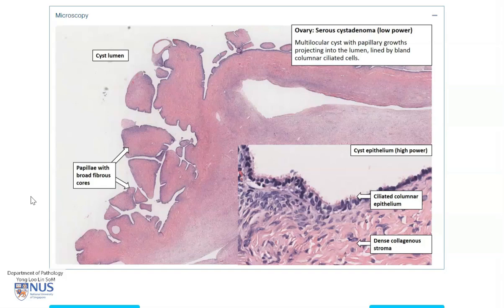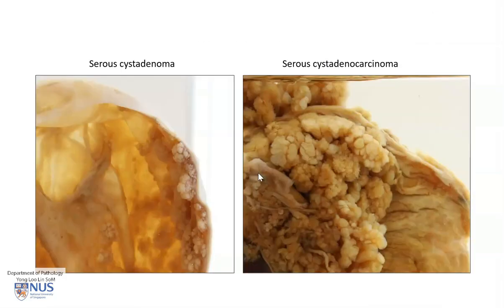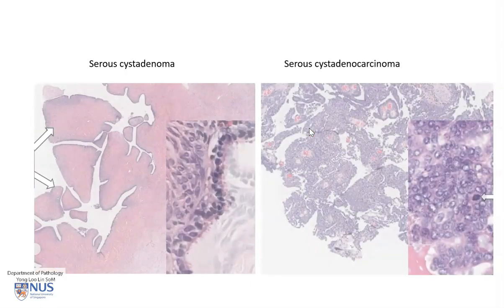We are now going to do a very quick comparison of the gross as well as the microscopic features of benign versus malignant serous tumors. Here is a side-by-side comparison of the gross features of a serous cyst adenoma with relatively small papillary excrescences or projections and no invasion into the cyst wall, as opposed to serous cyst adenocarcinoma, where you can still see a cyst locule but these rather fleshy papillary projections, and you can see them actually outside on the serosal surface or capsular surface of the ovary.